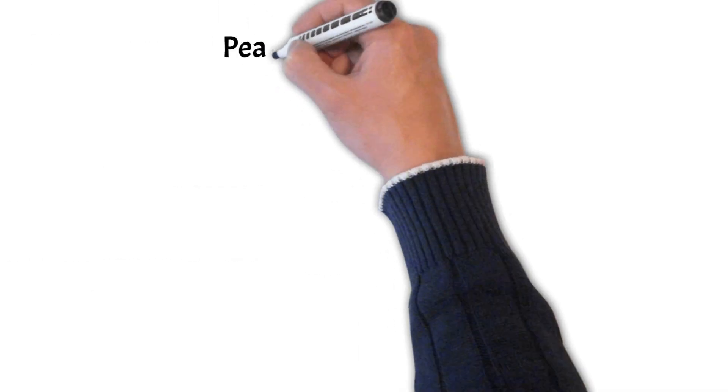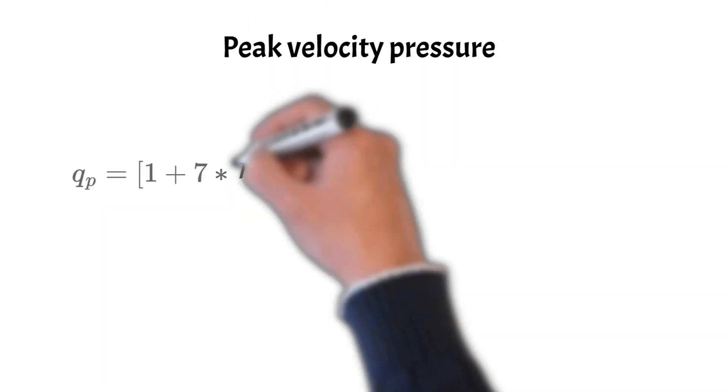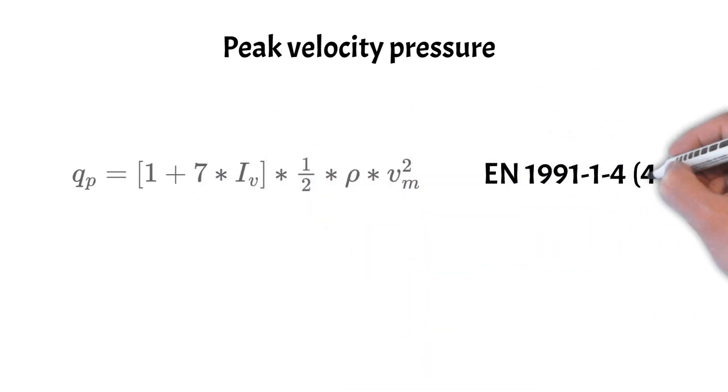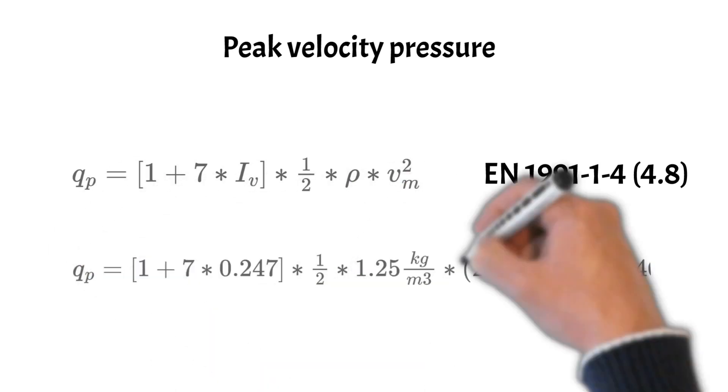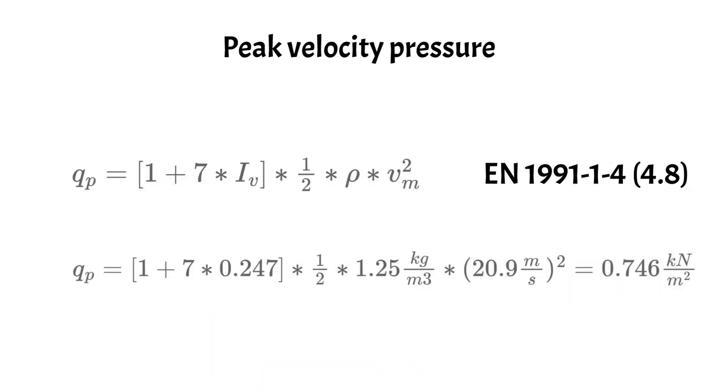Finally we can calculate the peak velocity pressure as opening bracket 1 plus 7 times IV closing bracket times 1 over 2 times the density times Vm to the power of 2. This is leading now to a peak velocity pressure of 0.75 kN per square meter.